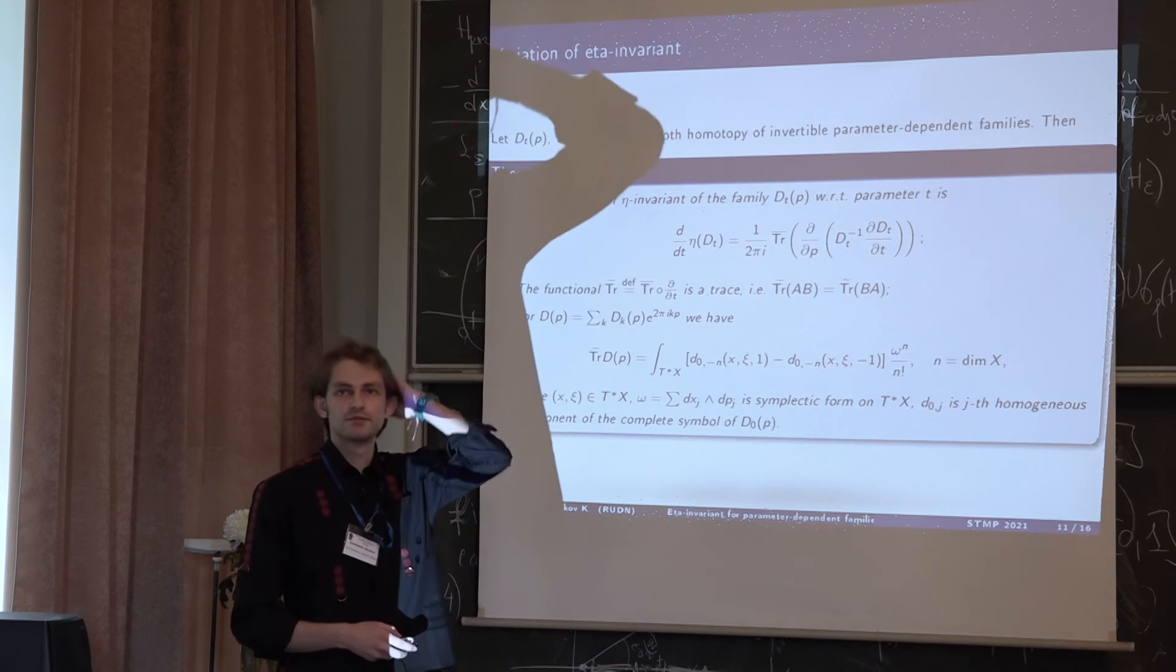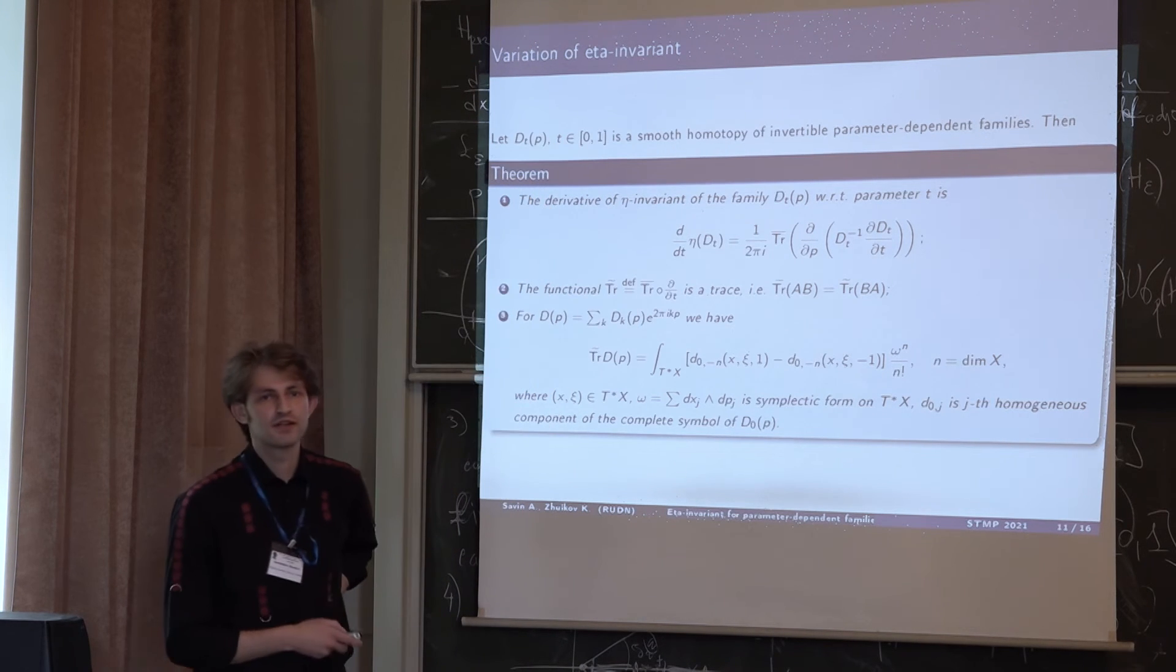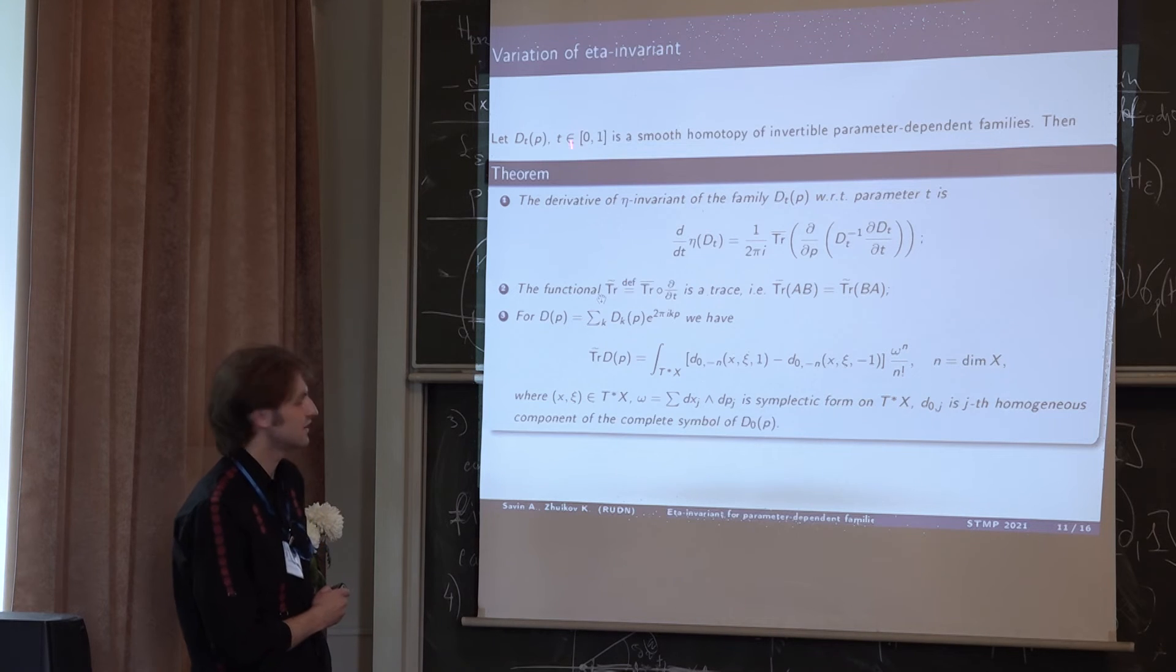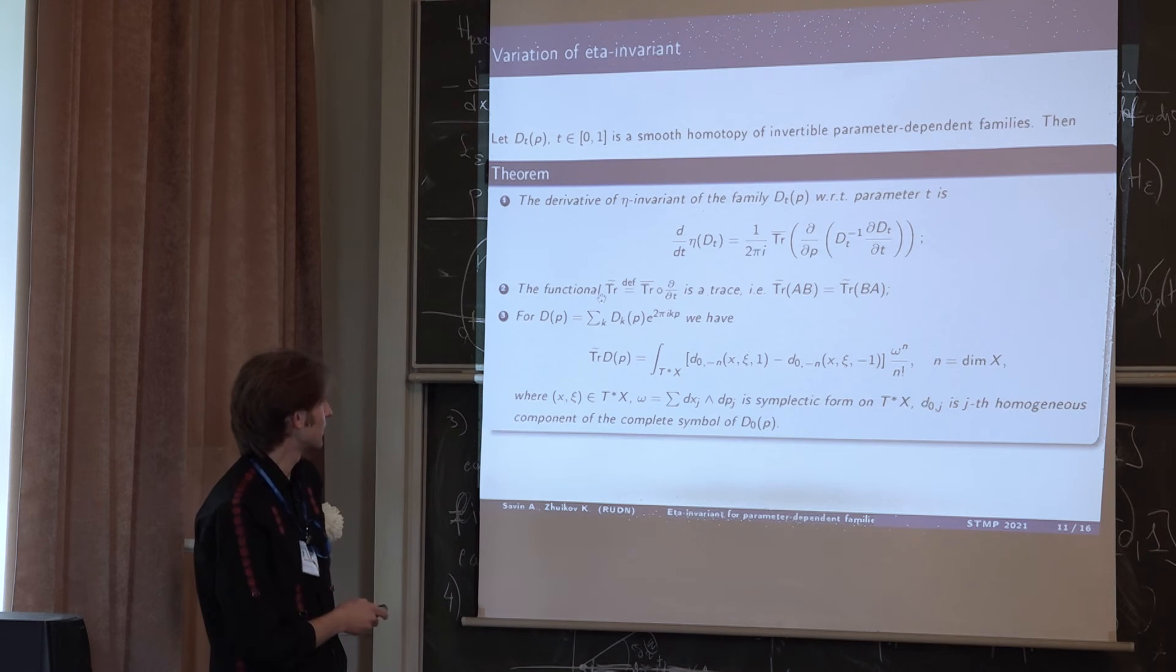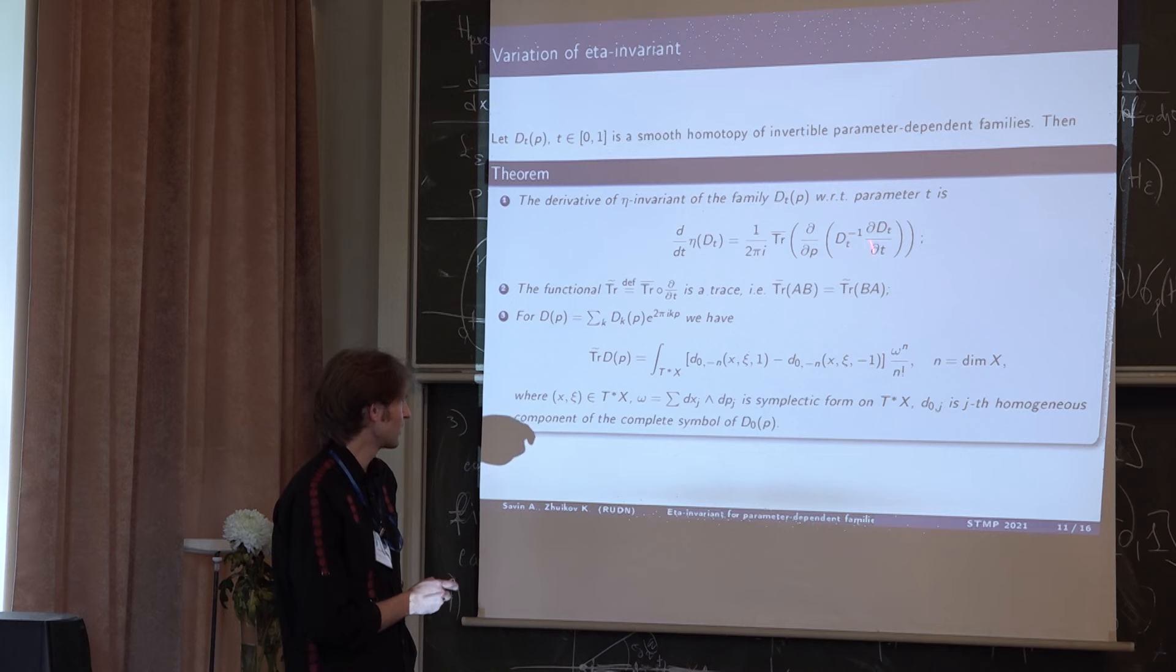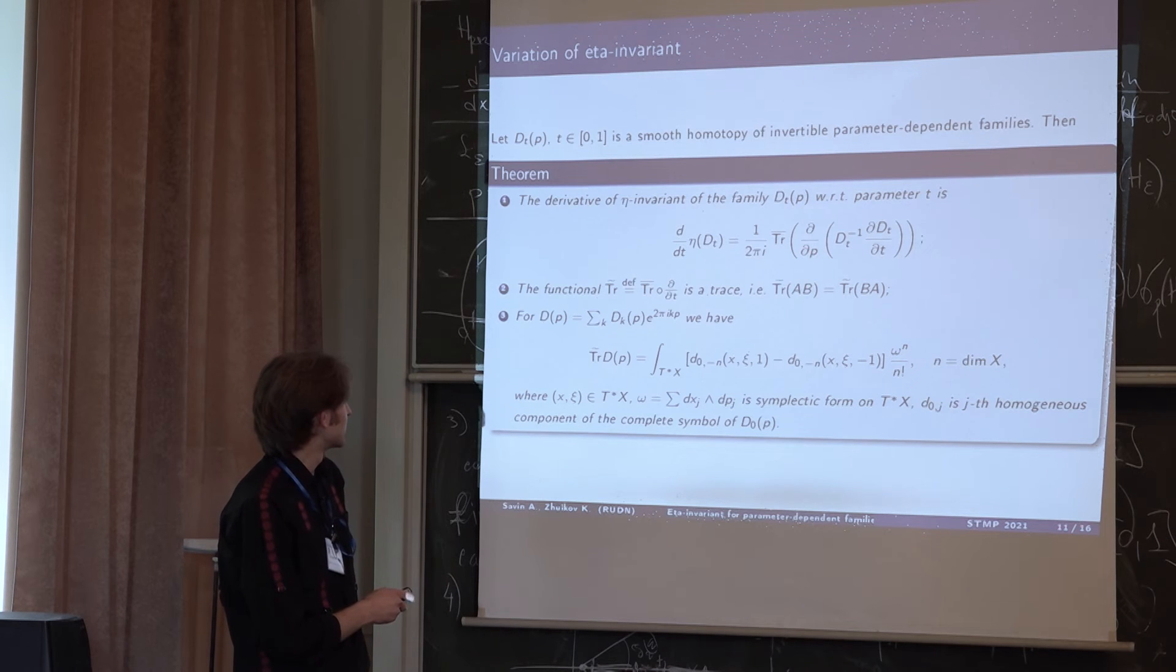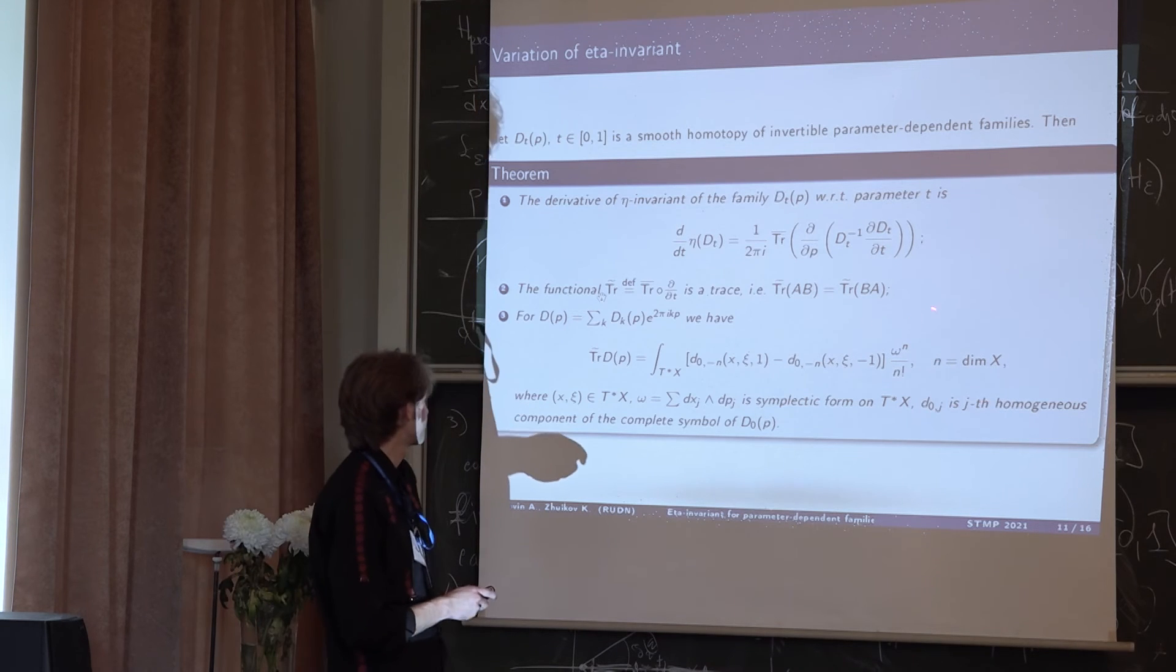Now let me tell you some words about the variation of eta invariant. If we take a smooth homotopy of our operator D_T where T from zero to one, then the derivative of eta invariant by this parameter T equals TR bar of the derivative of this expression by parameter P. So we can define the new trace, the new functional TR tilde, and it appears to be a trace. So TR of AB equals TR of BA.